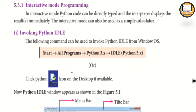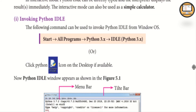To invoke Python IDLE, go to Start, All Programs, Python 3.X, and click on IDLE Python version. You can also click on the shortcut icon on the desktop. Clicking on IDLE opens the Python shell window.